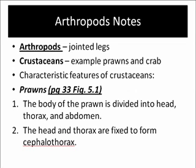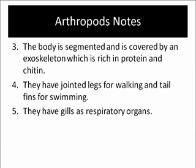Let's talk about the characteristics. The body of a prawn is divided into the head, thorax, and abdomen. The head and thorax are fixed to form what's called the cephalothorax. The body is segmented and is covered with an exoskeleton, which is rich in protein and chitin. Remember that exoskeleton means exo — outside — and skeleton, which is the structure that supports the body. So the exoskeleton is the covering on the outside.